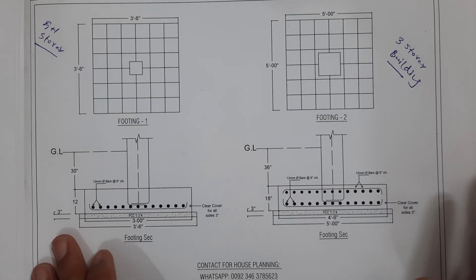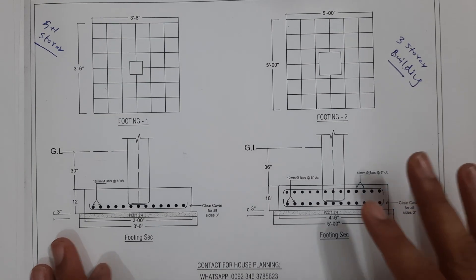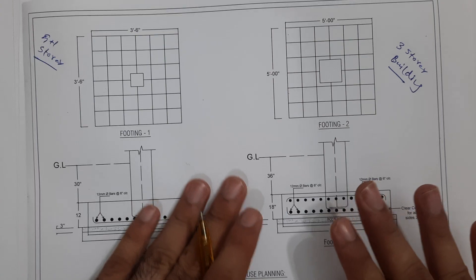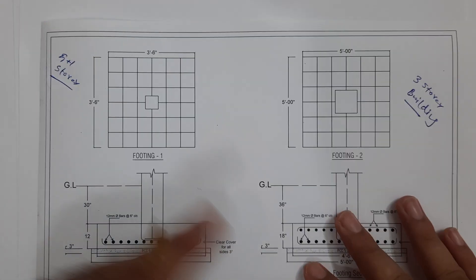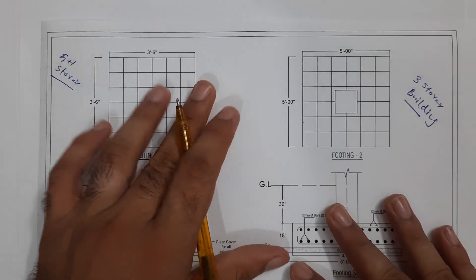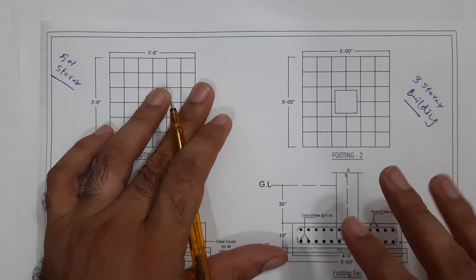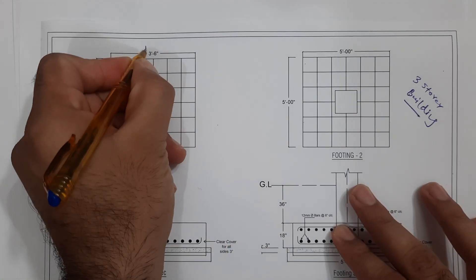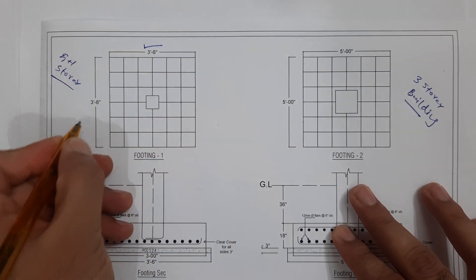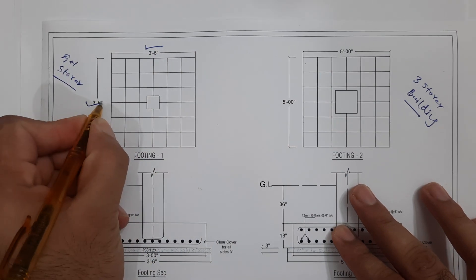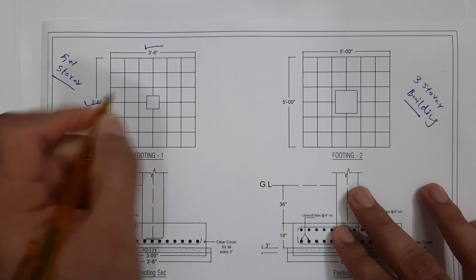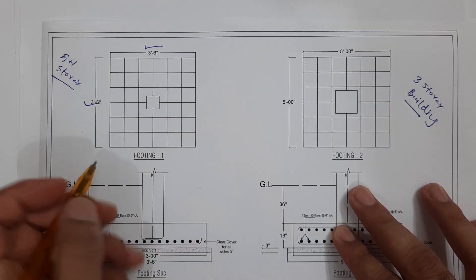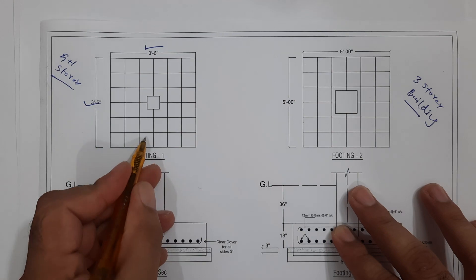Let's get started. How to read the structural drawing of RCC footing — this footing is for a G+1 two-storey residential building. Its size is three feet six inches by three feet six inches. This is called an individual footing.